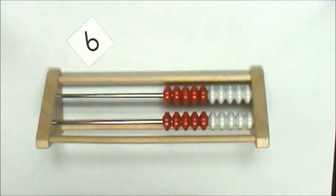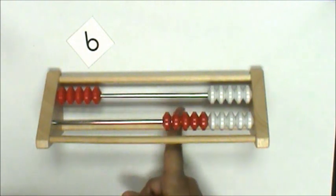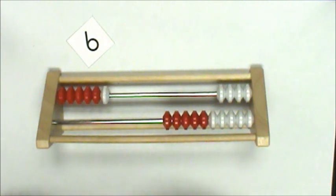Next represent the number on a Rekenrek. I move over 5 red beads and 1 white bead and I have 6. I know there are 6 beads because all of the red beads equal 5 and 1 more bead equals 6.